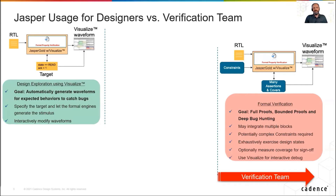The most easily adopted approach that designers can use is to leverage Jasper Visualize for design exploration. The goal is to automatically generate waveforms for expected behaviors and then identify bugs while looking at those waveforms. Here we tell Jasper Visualize what target behavior we would like to see. Jasper formal engines will automatically create stimulus with the flexibility to modify waveforms as we go. This method often takes just minutes to start generating interesting waveforms to debug.